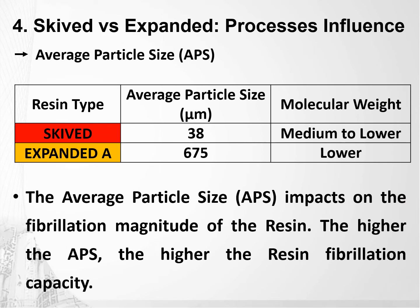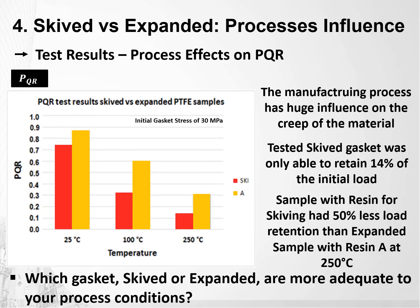Besides the difference in process itself, the type of resin used in the processes are also different. Skived PTFE commonly uses granular PTFE, while expanded uses fine powder. The differences in the raw materials can be seen in the table below. In this particular example, even though both resins have somewhat similar molecular weights, the average particle size of the skived resin is around 5% of that used in an expanded process. This has a huge impact on the fibrillation and therefore alignment magnitude of the resin. The higher the average particle size is, the higher the resin fibrillation capacity is.